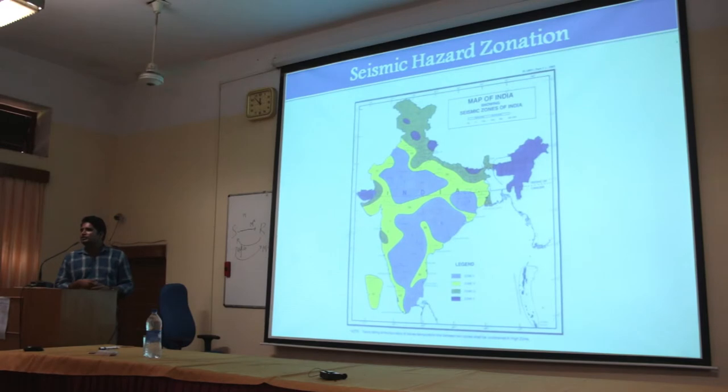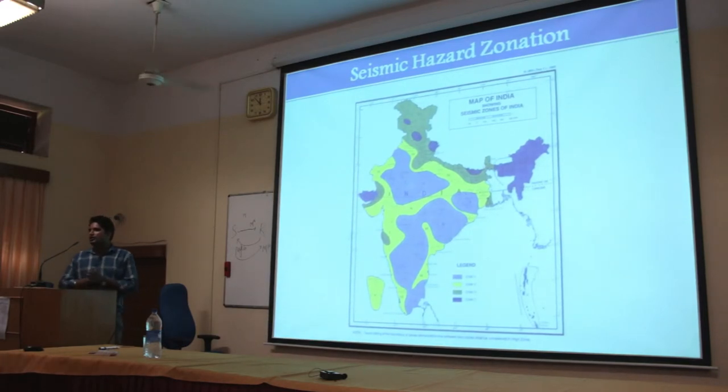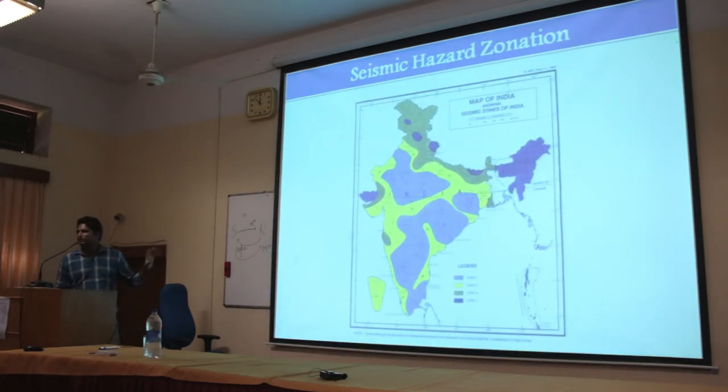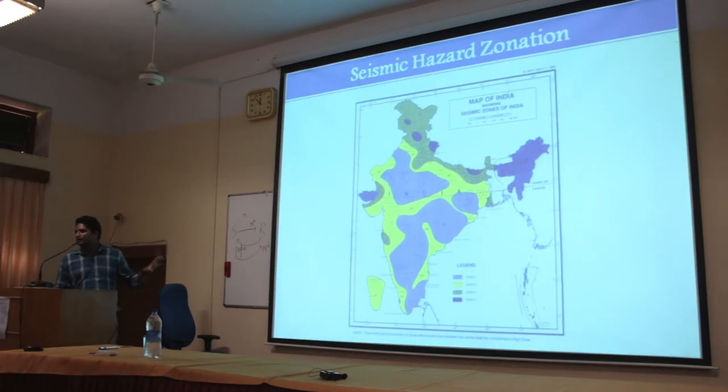Based on the destruction caused by earthquakes, a map known as the seismic zonation map has been prepared. It ranges from zone number 2 to 5. Initially there was also a zone 1 but that no longer exists today. The higher the zone number, the greater the possibility of destruction.